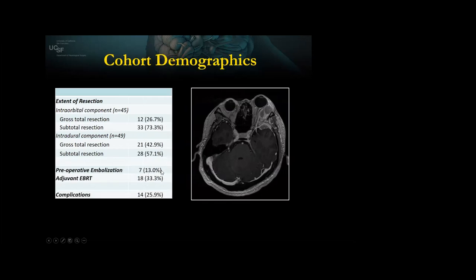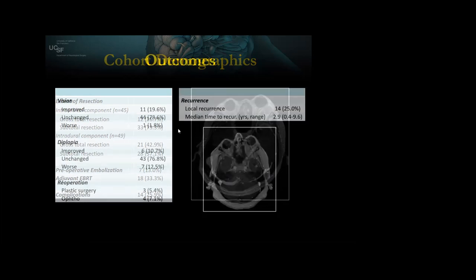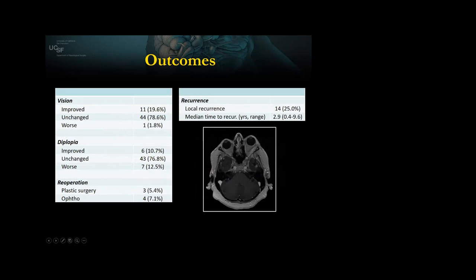About 33% of patients needed adjuvant treatment for imaging evidence of recurrence post-op. If I know I had a subtotal resection, I usually recommend radiation therapy earlier rather than waiting for recurrence. The recurrence rate in this series was 25%, with a median time to recurrence of about three years. Luckily, only 2% of patients had worsening vision as a result of this type of intervention. The majority were unchanged, about 20% were improved. Double vision was unchanged in 76%, worse in 12%, and there were a few patients that required re-operation.